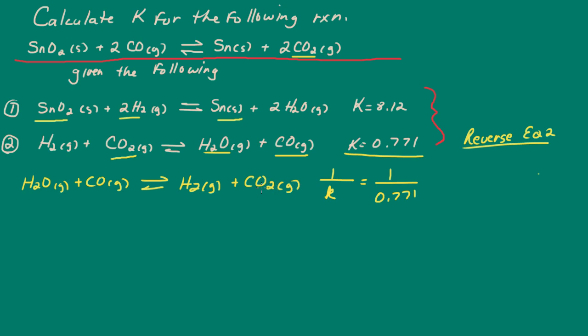Now, what I'm going to do, notice that in equation number 1, there are 2 hydrogens and 2 waters. So what I'm going to do is I'm going to multiply equation 2 by 2. So let's go ahead and multiply these coefficients.